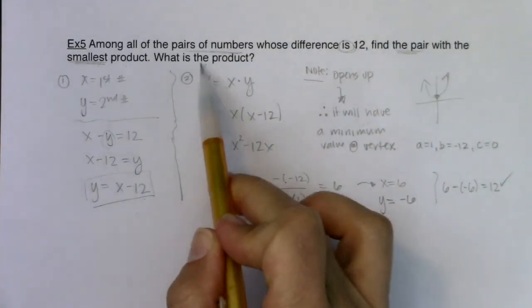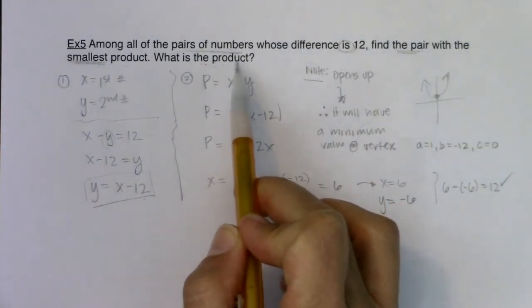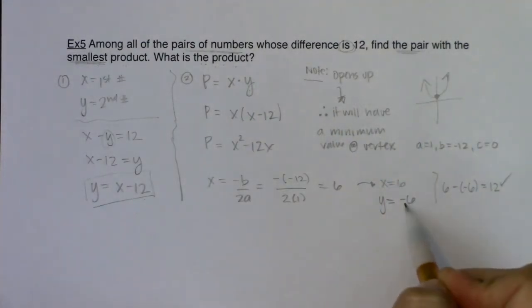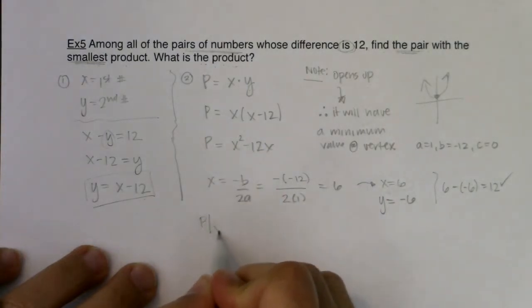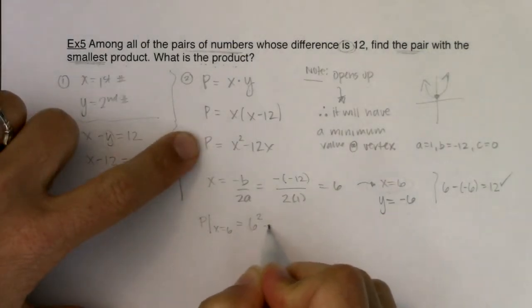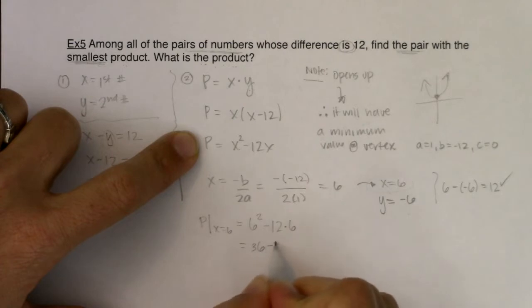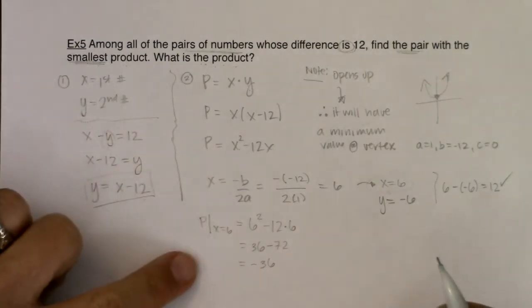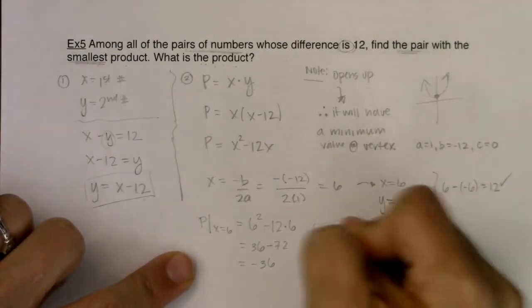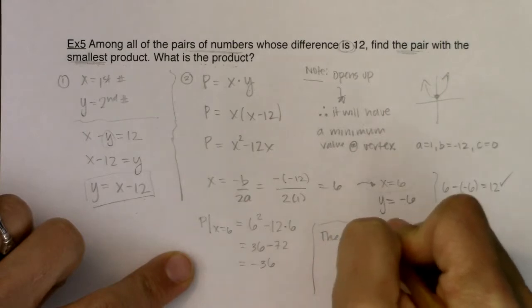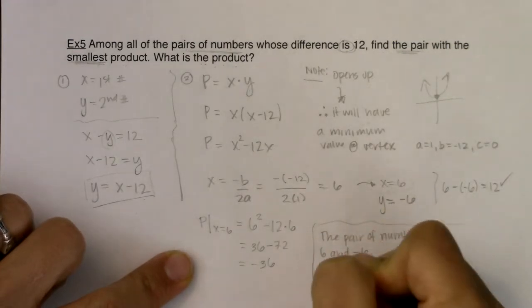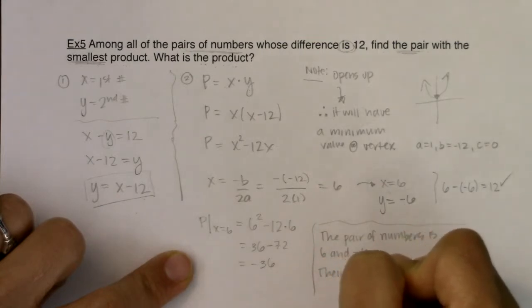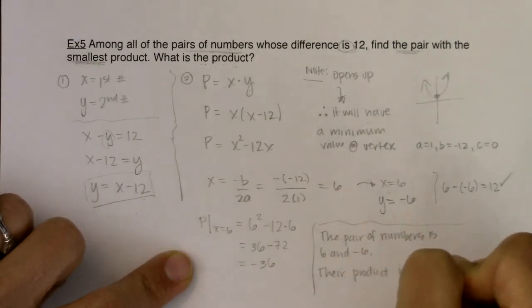But I, so I found the pair, but I have not found the actual product. So what is the product of these two numbers? Well, you can see that I could multiply them and get negative 36 because 6 times negative 6 is negative 36. But I also want you to see if you ever plug the x coordinate of your vertex back into the original function. What is the product when x is equal to 6? Well, that would be 6 squared minus 12 times 6, which would be 36 minus 72, which would ultimately be negative 36. So if I wanted to answer this question in a sentence, the pair of numbers is 6 and negative 6. Their product is negative 36.